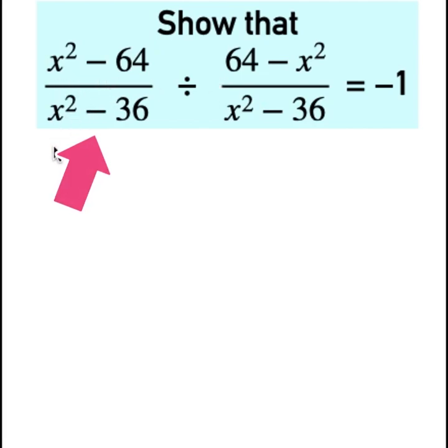Show that x squared minus 64 over x squared minus 36 divided by 64 minus x squared over x squared minus 36 is equal to minus 1.